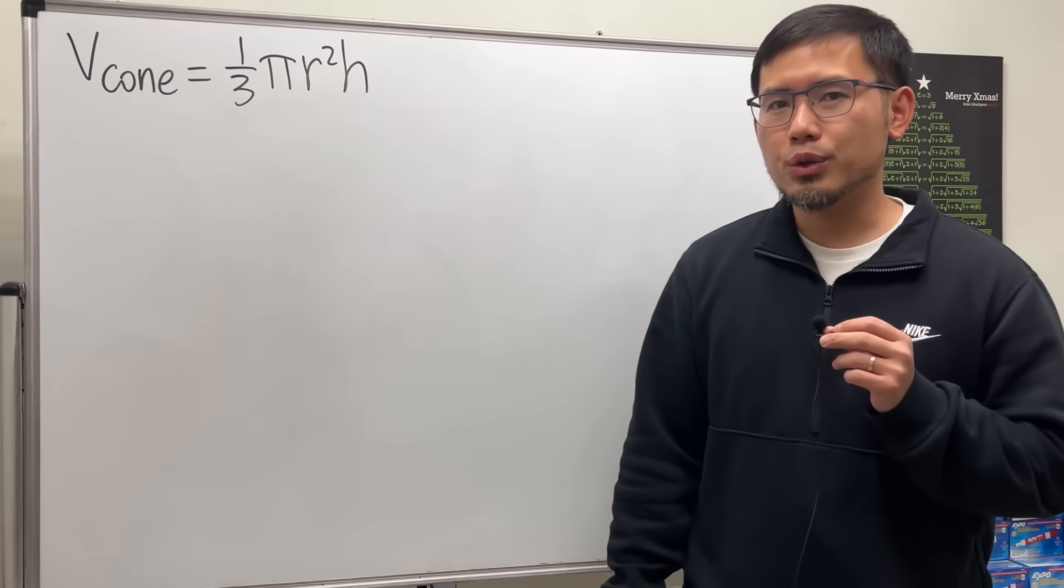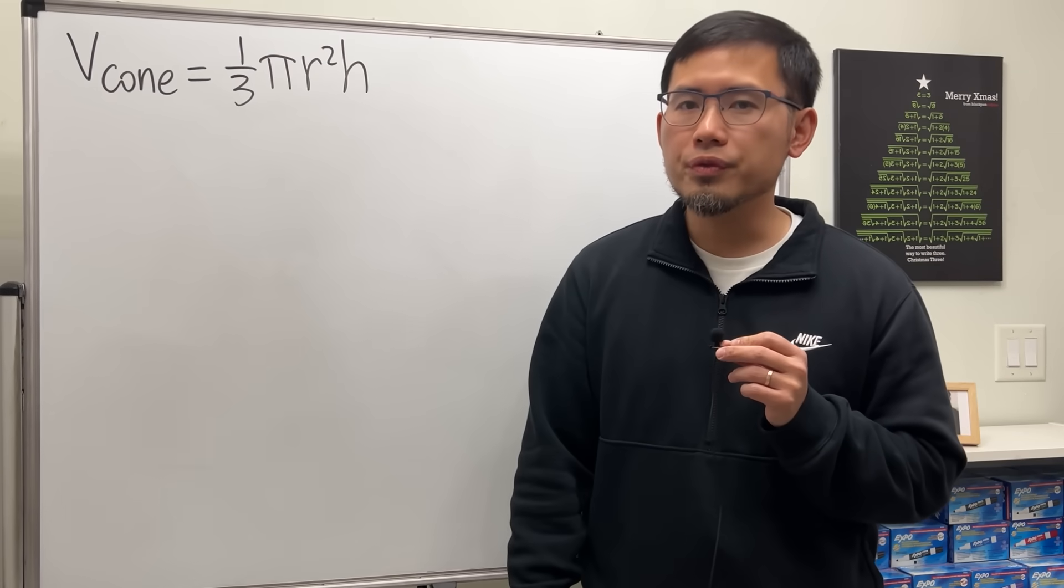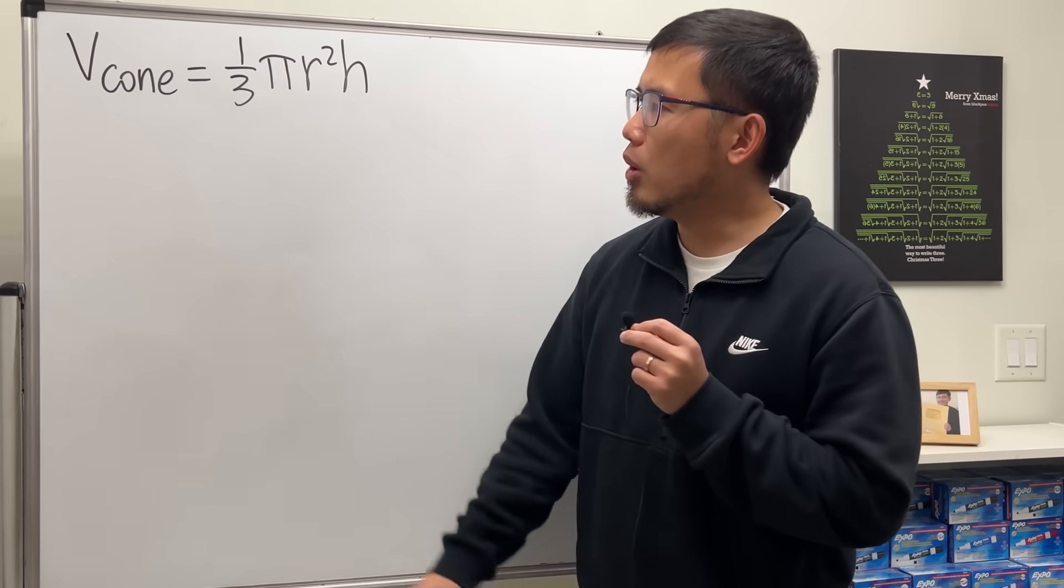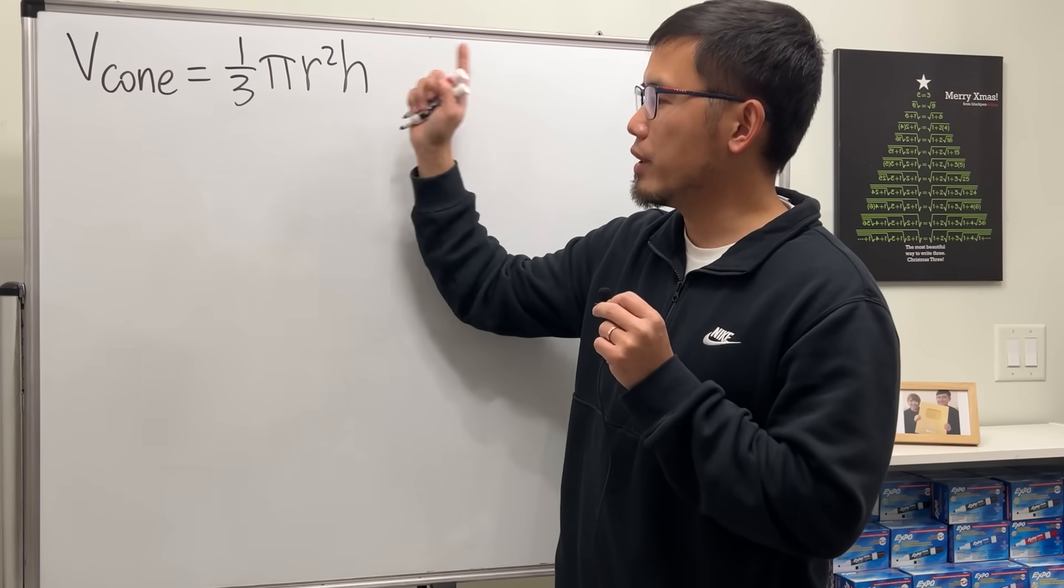Okay, I would like to show you guys how we can use the disk method to prove the formula for the volume of a cone being one third pi r squared h.